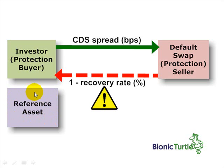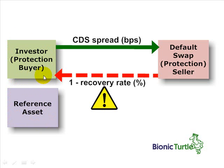Notice I did not draw a line between the reference asset and the investor or protection buyer. That's because the investor may own this underlying bond, but the investor does not need to own it. So this is an important feature of the credit default swap: an investor can buy protection on an underlying reference asset without actually owning it.